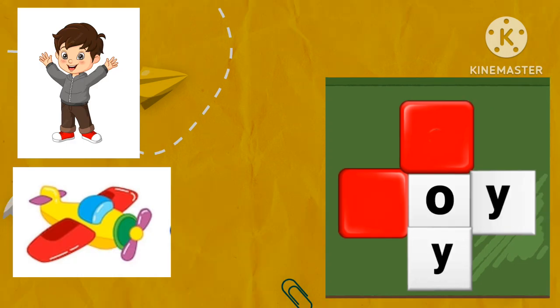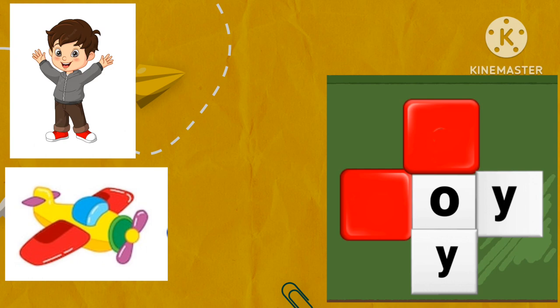Now look at the pictures and say the rhyming words. Boy, toy. Which letters are missing? B, letter B, and T, letter T. Drop the missing letters in the red boxes. B for boy and letter T for toy. Well done.